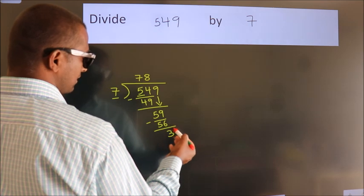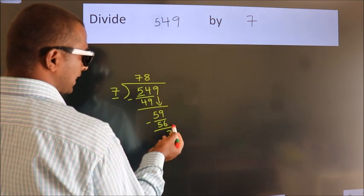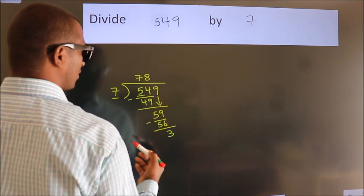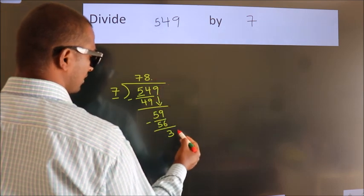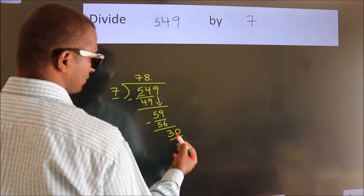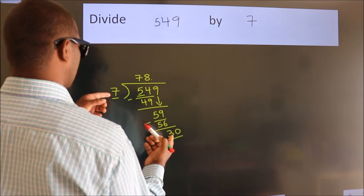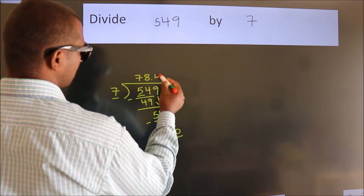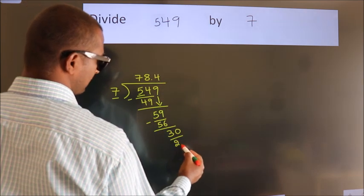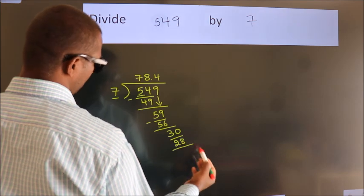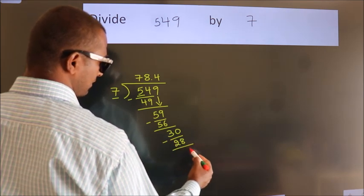After this, no more numbers to bring down. So what we do is we put a dot and take 0. So 30. A number close to 30 in the 7 table is 7 times 4 equals 28. Now we subtract. We get 2.